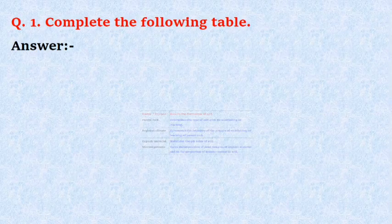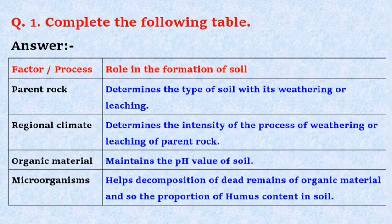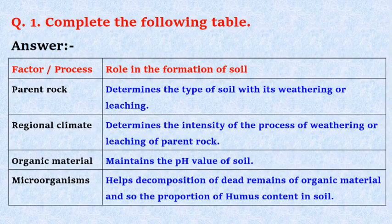Question number 1: Complete the following table. Answer — Factor or process and its role in the formation of soil. First, Parent rock: determines the type of soil with its weathering or leaching. Second, Regional climate: determines the intensity of the process of weathering or leaching of parent rock. Third, Organic material: maintains the pH value of soil. Fourth, Microorganisms: helps decomposition of dead remains of organic material and so the proportion of humus content in the soil.